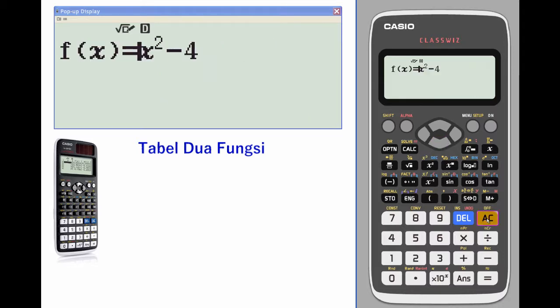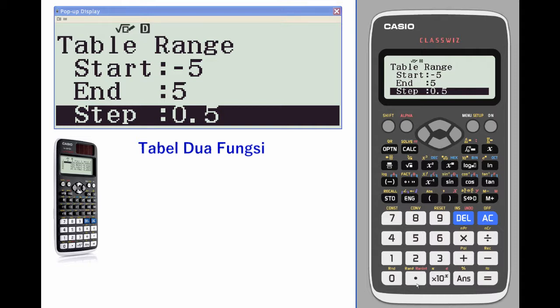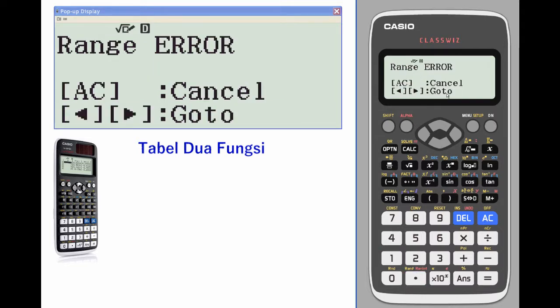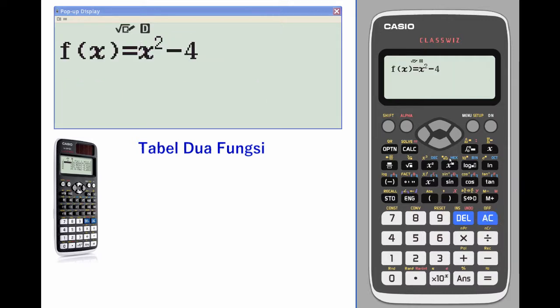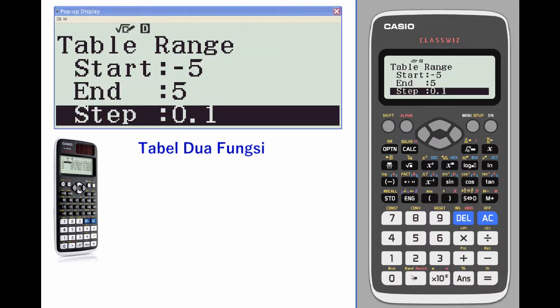Again, a possible problem you could run into is if you set your table value too small, you get a range error which just means you've set it a little too small, so just go back and change it to something that's a little bit more doable.